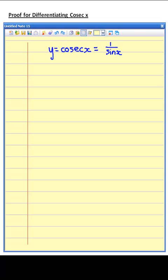We then take sine x up to the numerator and therefore give it a power of minus 1. We now have a bracket, and so we can use the bracket rule to differentiate this. So quite simply, we bring the power down to the front, so we have dy by dx equals...